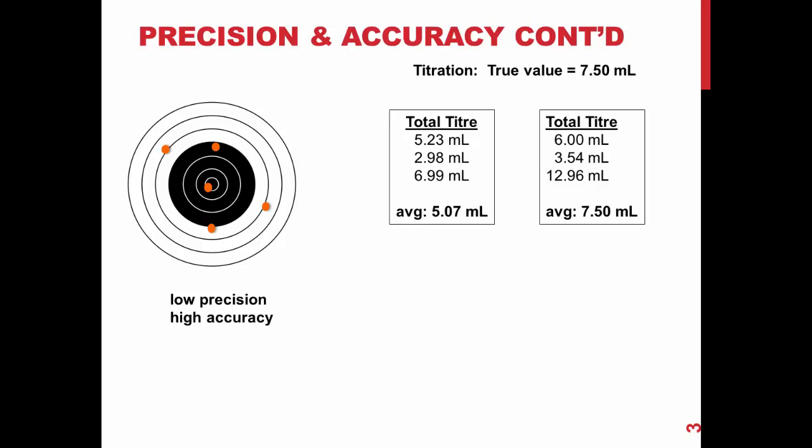In terms of titrations, this set of trials would show low precision as there is a large deviation among the titers; however, it shows high accuracy as the average is very close to the true value.